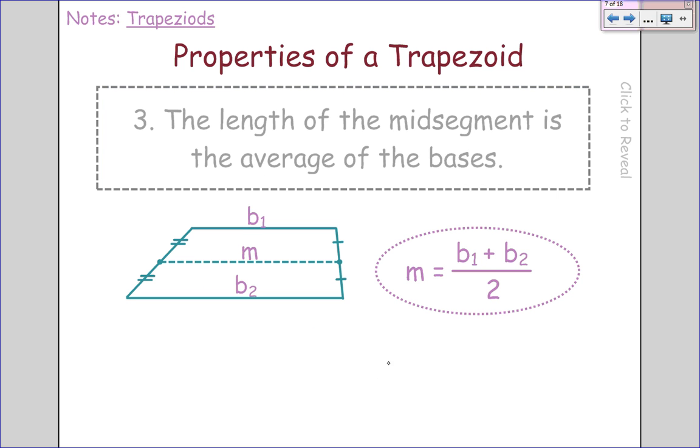For a mid-segment of a trapezoid, the length of the mid-segment is the average of the bases. So if I want to find the length of this mid-segment, I just add the two bases and divide by 2 because that's how we find the average. So if this base was 10 and this base was 20, I would do 10 plus 20 divided by 2 equals 30 over 2, which equals 15. So that segment would be 15 long, right in the middle.